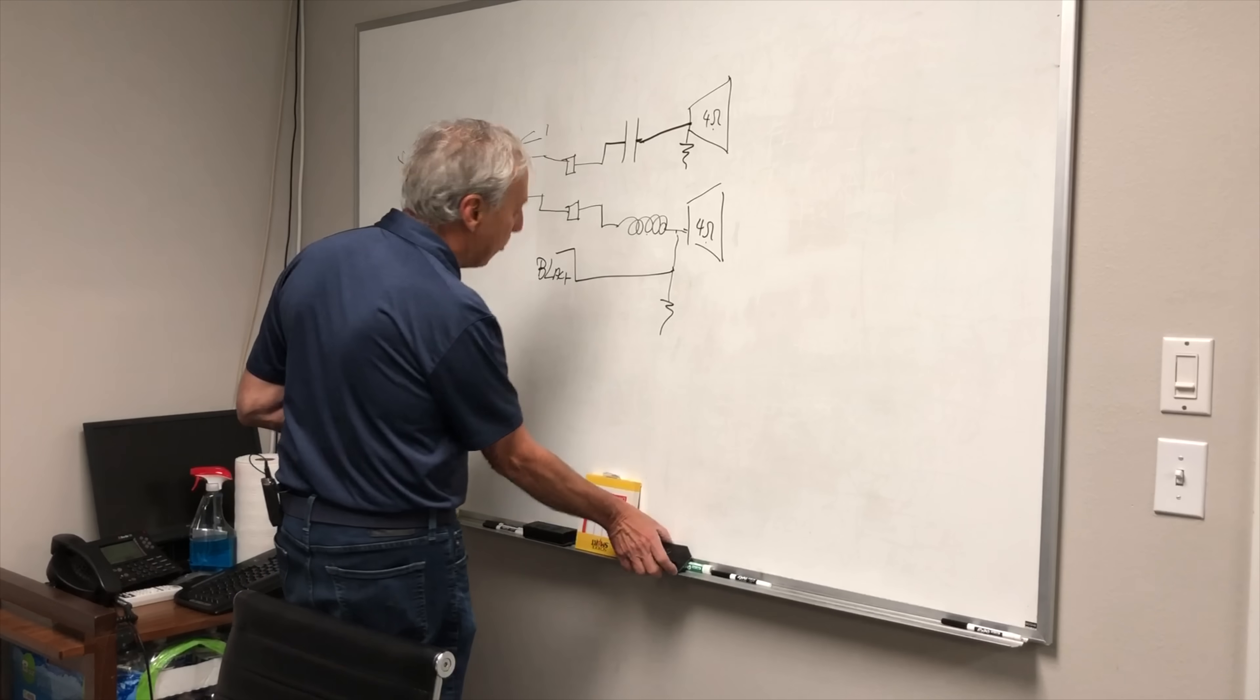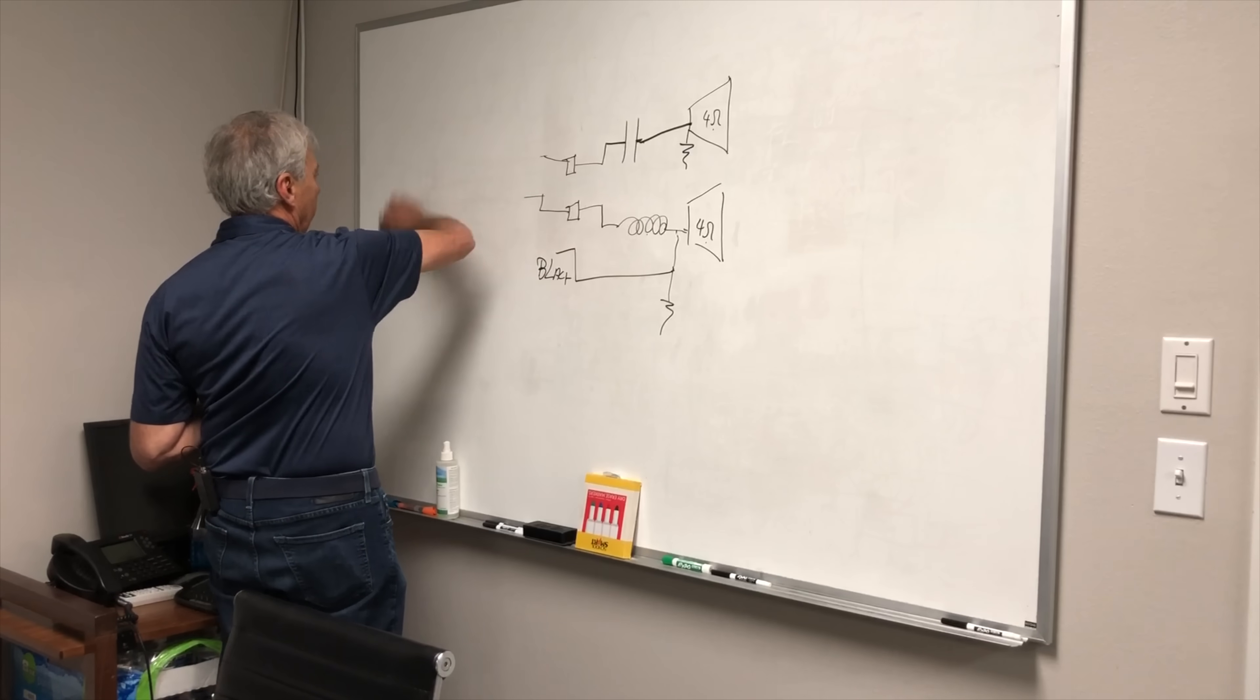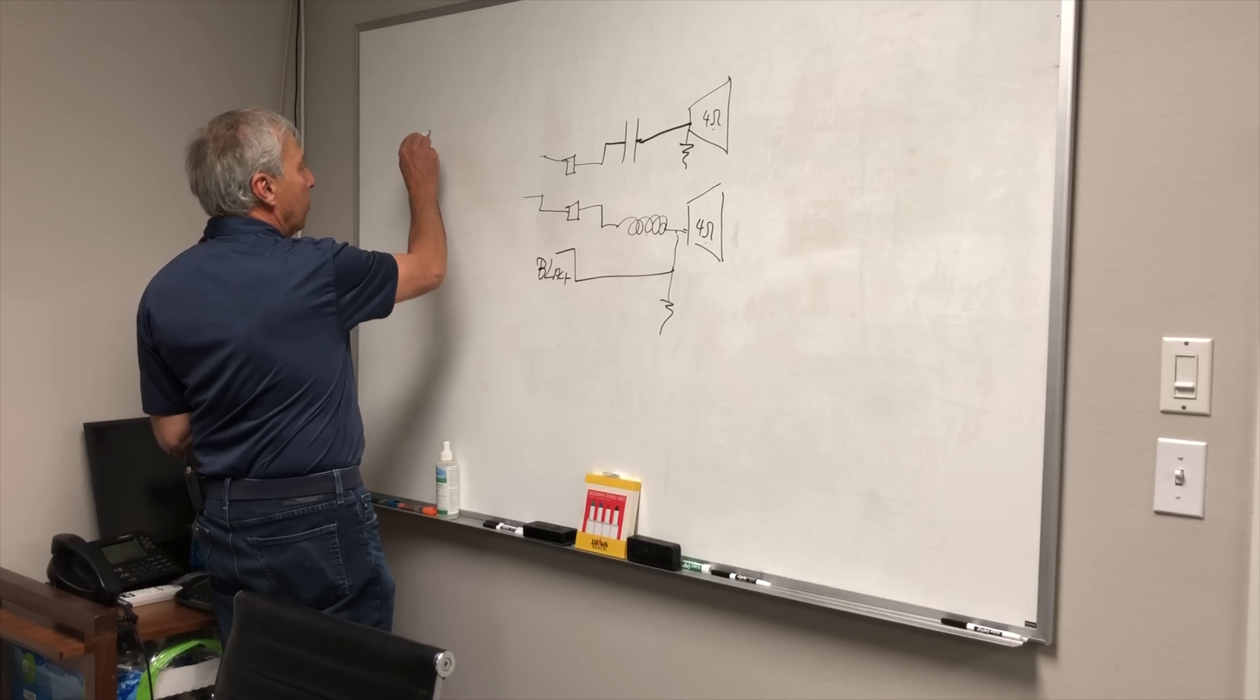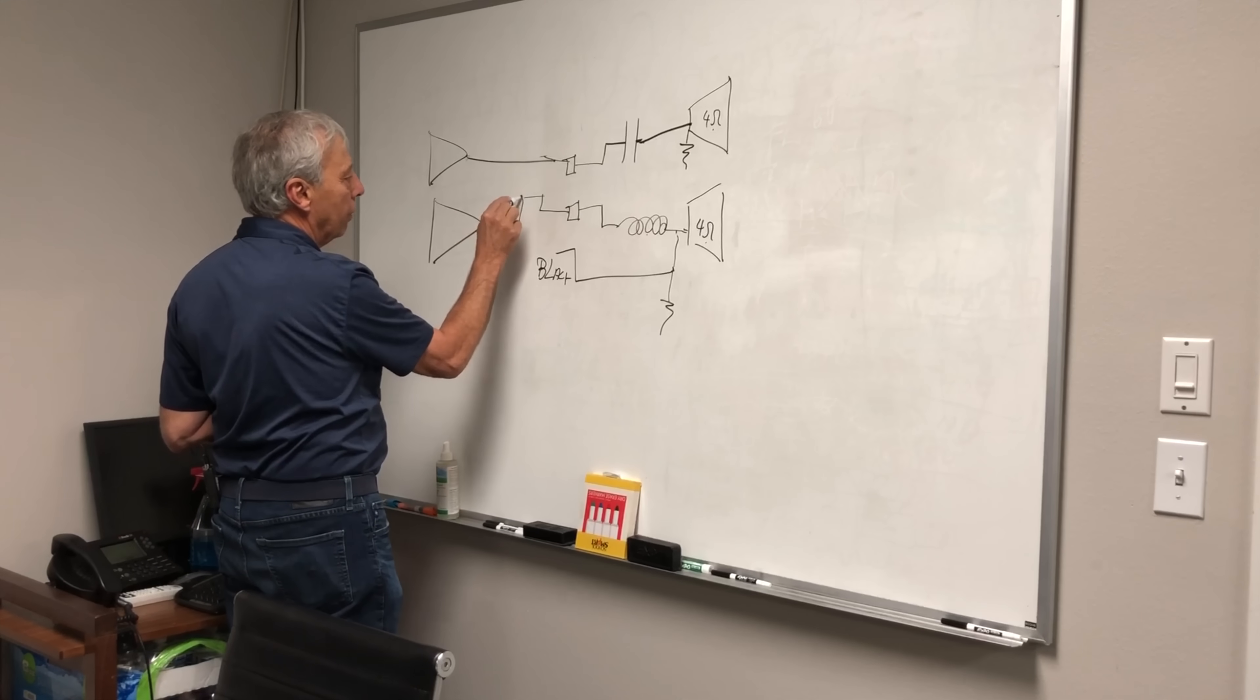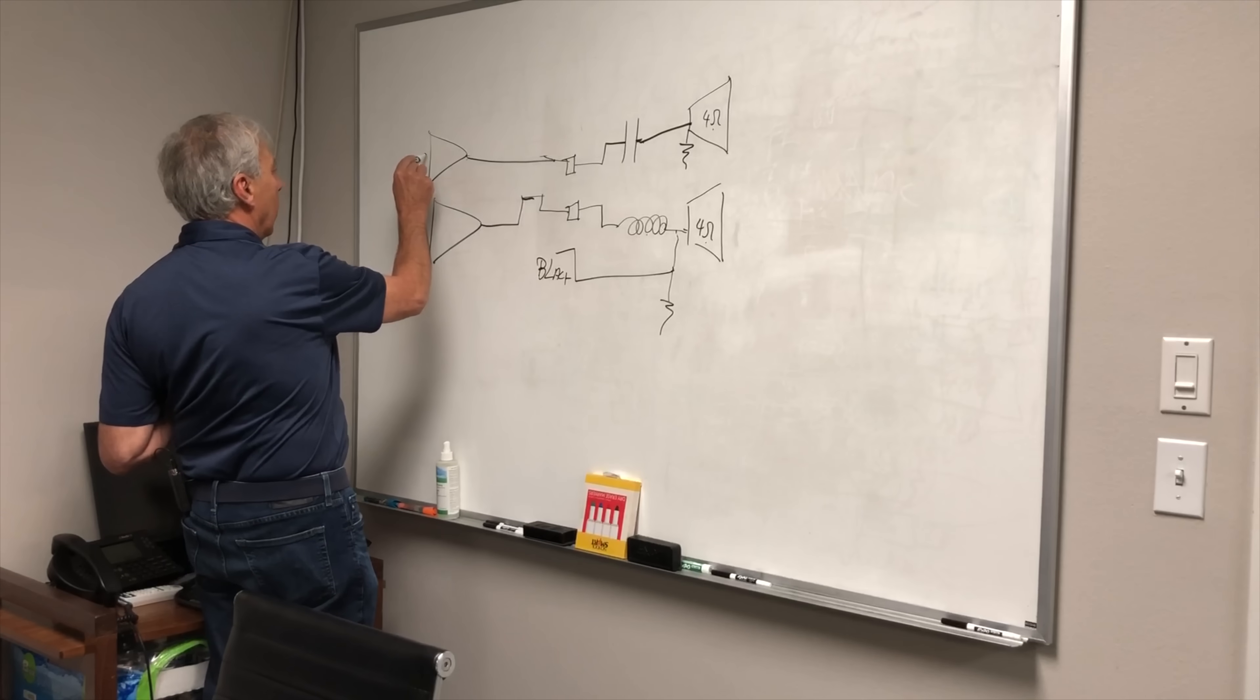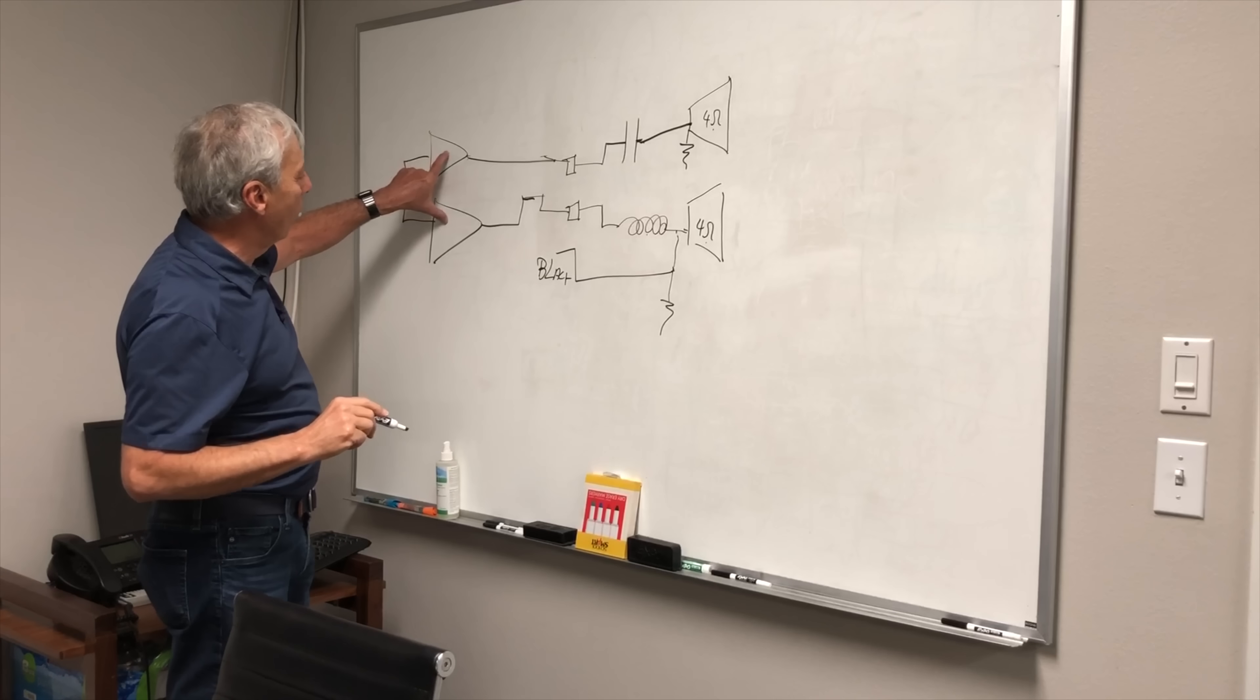Let's quickly cover bi-amping, and that is real simple. Now that we have that down, we just need to have two amplifiers. One is feeding the tweeter, and the other is feeding the woofer, each on their own separate wire. Here, I can pair the inputs up, so I have a single input feeding both.